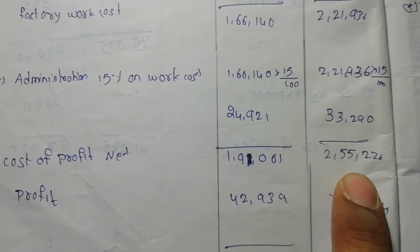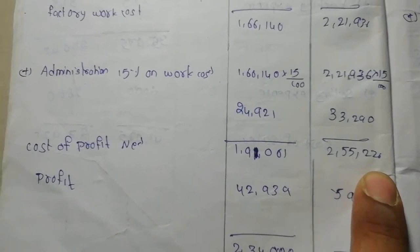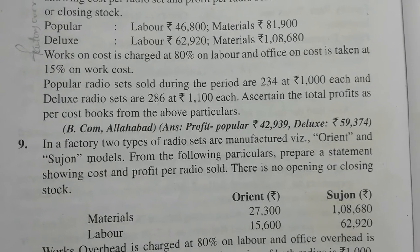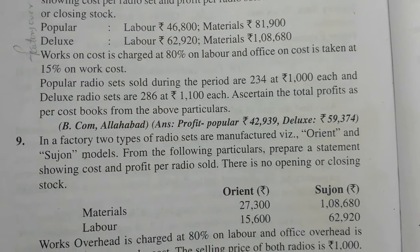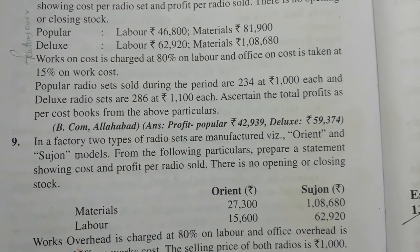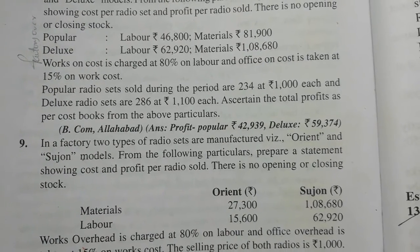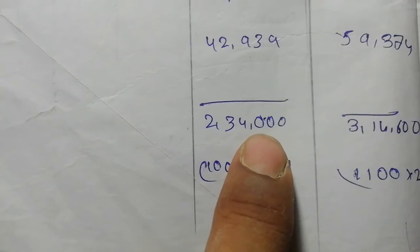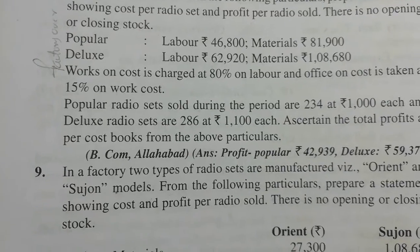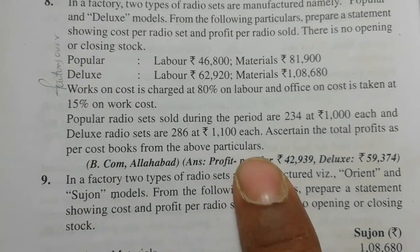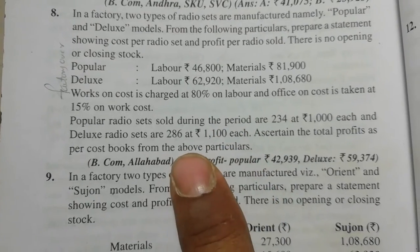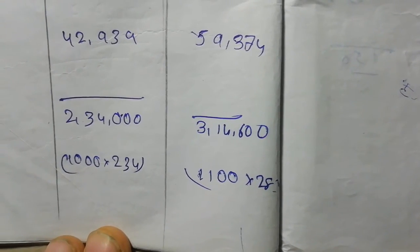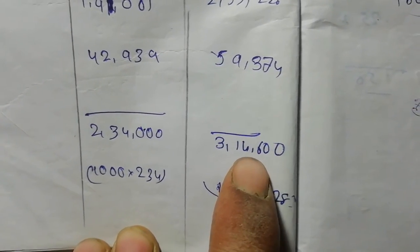Popular radio sets sold during the period are 234 at 1000 each. The total sales value is calculated. For deluxe, 286 sets sold at level 100 each gives 286 into 100, which equals 3,14,600.